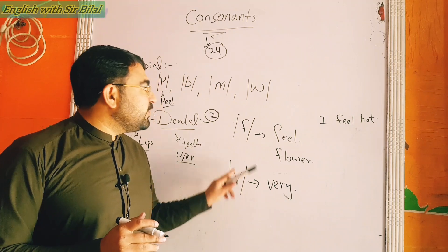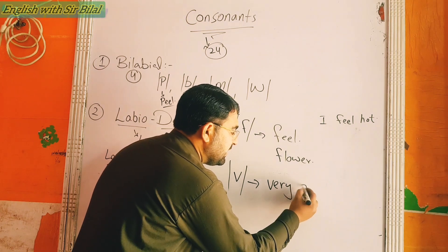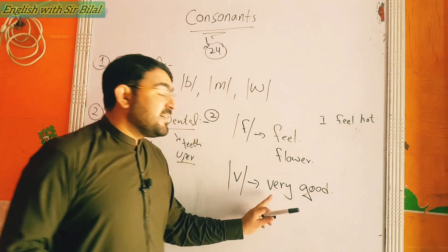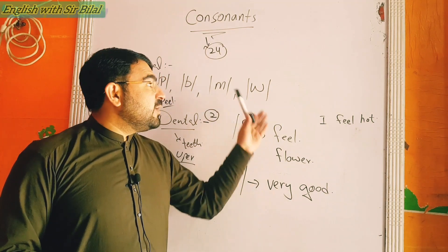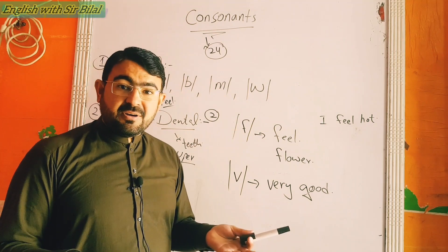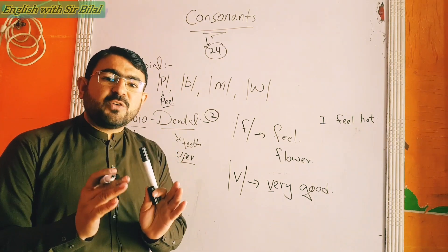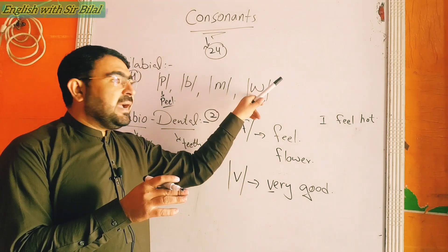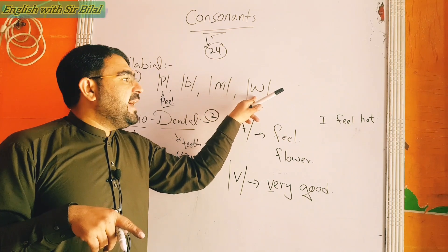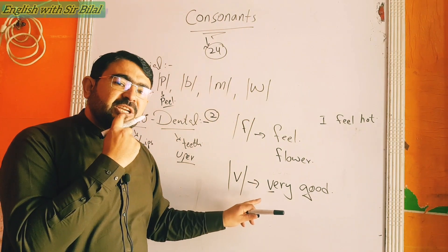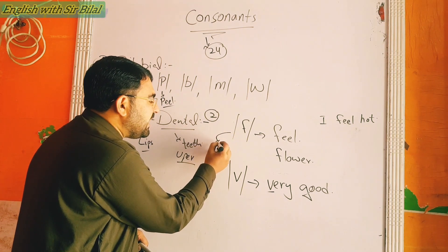Instead of the /v/ sound we make a /w/ sound — that is a mistake in our pronunciation. For example: instead of 'very good' we say 'wery good,' which is totally wrong. Here the first sound is /v/. Note that /w/ is a bilabial sound — you round your lips to make /w/ — whereas for /v/, your upper teeth touch your lower lip. The /f/ sound is unvoiced — no voice is used.